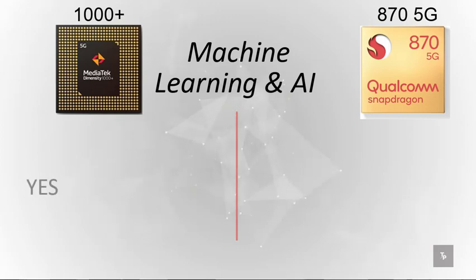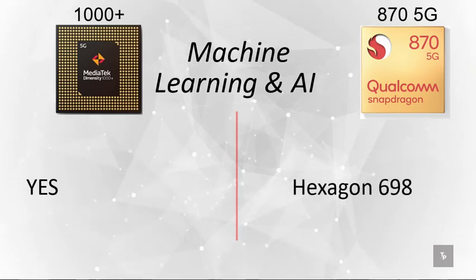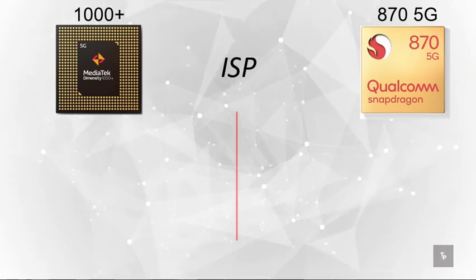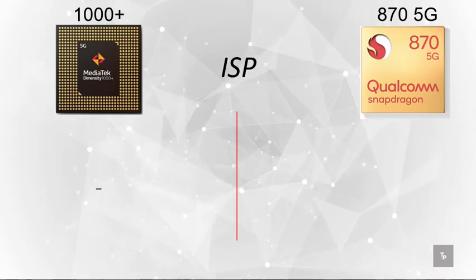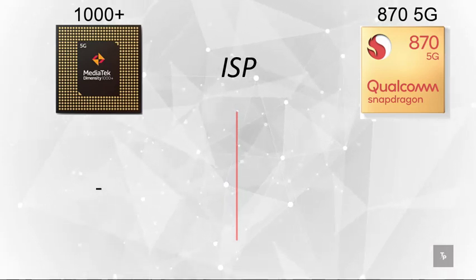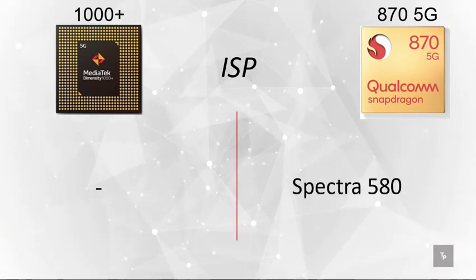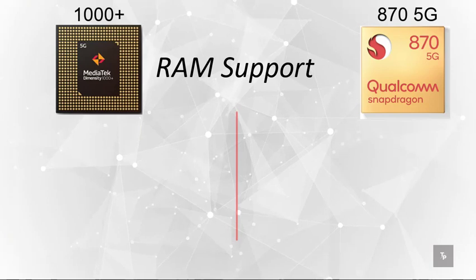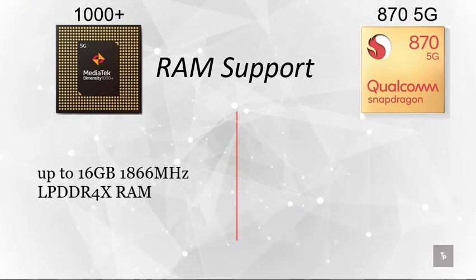For machine learning and AI performance, the MediaTek also has machine learning support but it's not specifically detailed. The Snapdragon 870 comes with the Hexagon 698 DSP. On the ISP side, the MediaTek Dimensity 1000 Plus does not have a specified ISP, whereas the Snapdragon 870 features the Spectra 580.